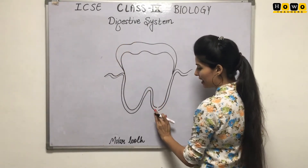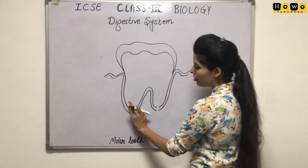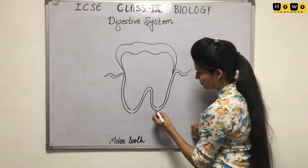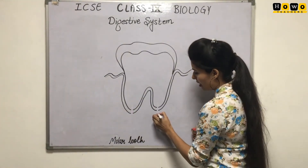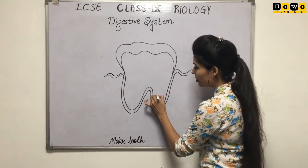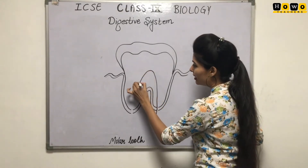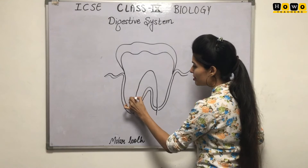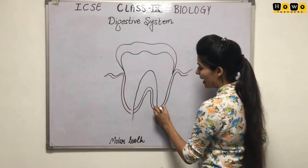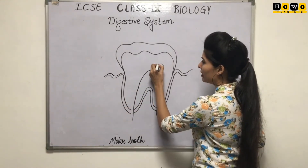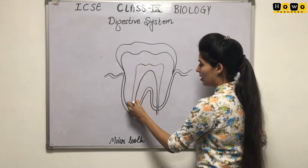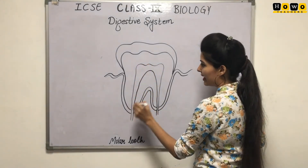Students, it will be better if you are going to draw the diagram along with me. Now here, in the center part, you have to draw an inverted U-shaped structure and you can write M over it like this.